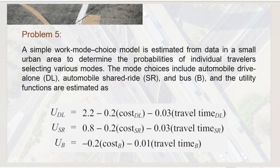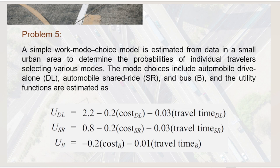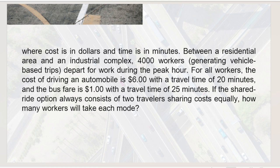A simple work mode choice model estimated from data in a small urban area determines the probabilities of individual travelers selecting various modes. The mode choices include automobile drive alone (DL), automobile shared ride (SR), and bus (B). The utility functions are: for drive alone, U_DL = 2.2 − 0.2C − 0.03T; for shared ride, U_SR = 0.8 − 0.2C − 0.03T; and for bus, U_B = −0.2C − 0.01T, where cost is in dollars and time is in minutes.